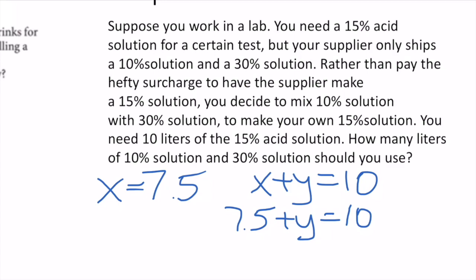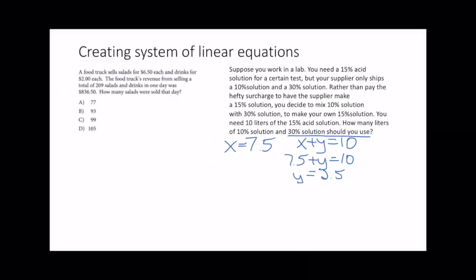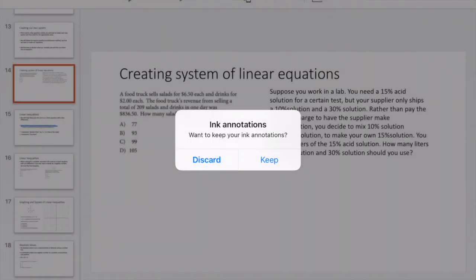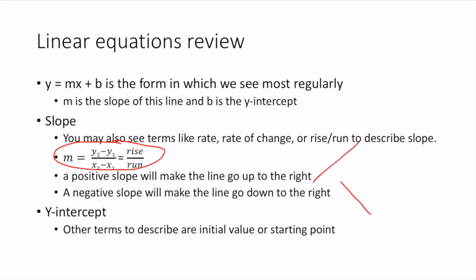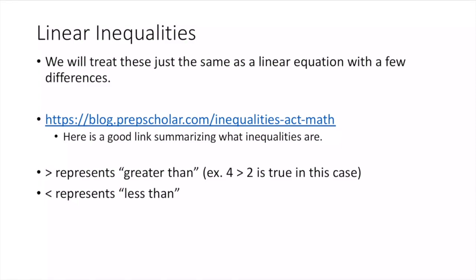Plugging x = 7.5 into the first equation: 7.5 + y = 10, so y = 2.5 liters of the 30% solution. Now it brings us to linear inequalities.